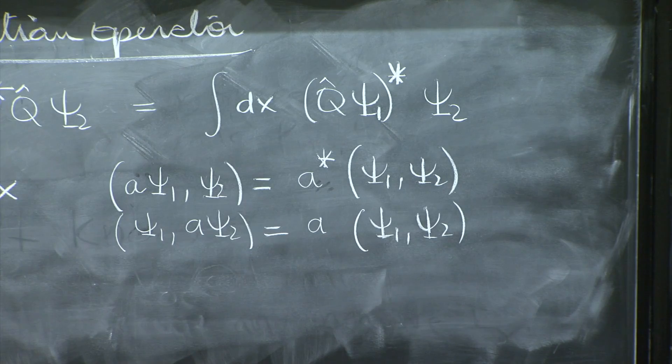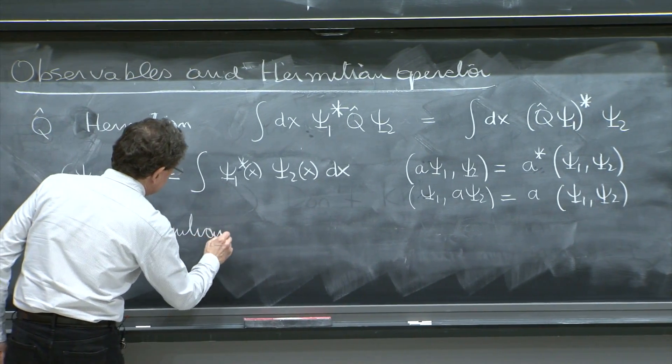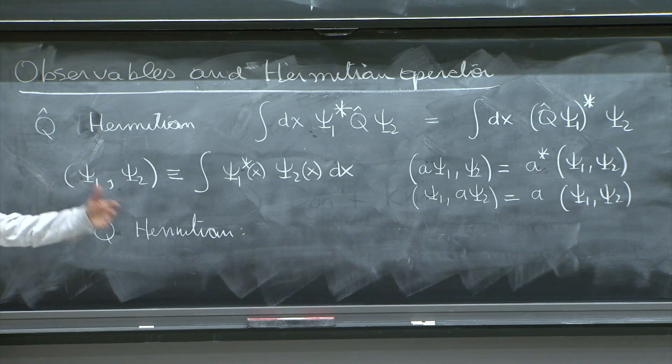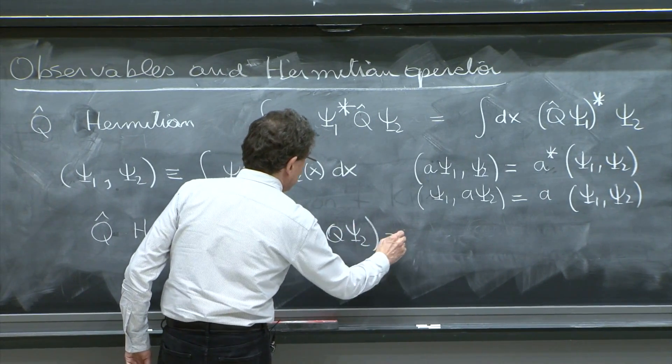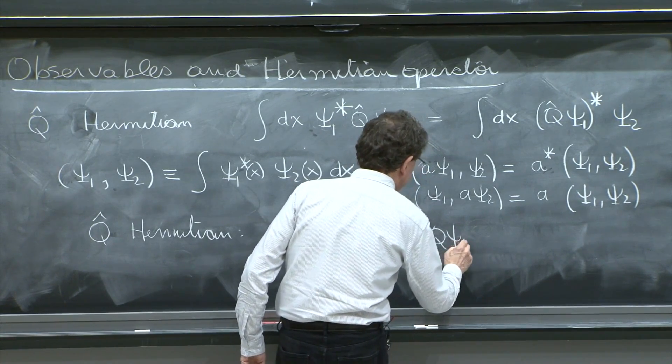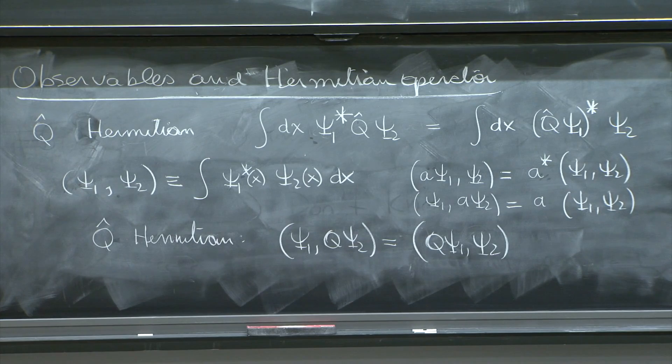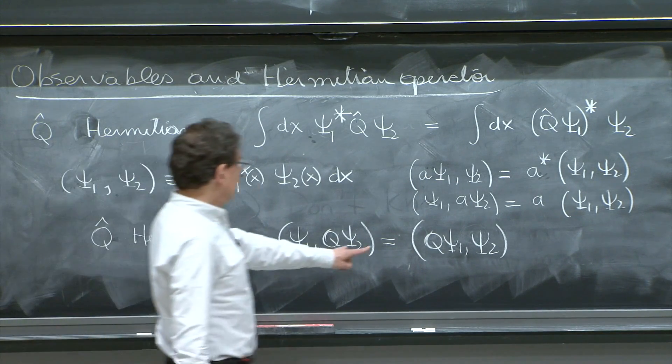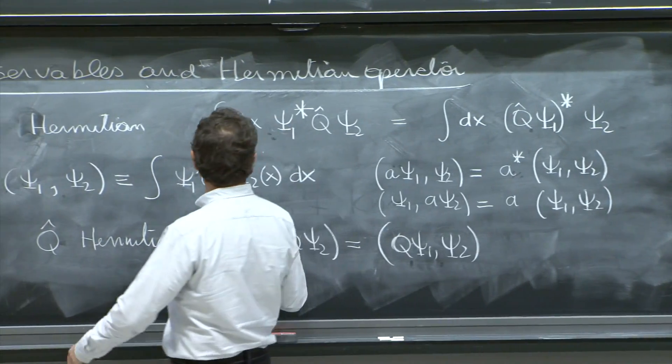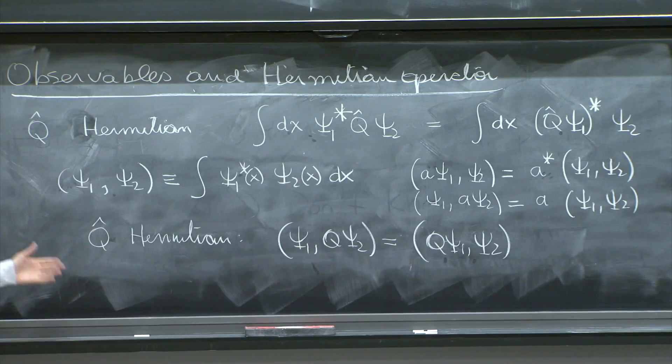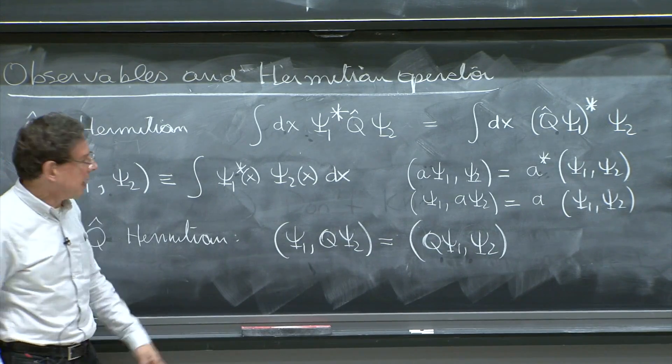With this definition, a Hermitian operator Q has a nice look to it. It becomes kind of natural and simple. It's the statement that if you have psi 1 comma Q psi 2, you can put the Q in the first input: Q psi 1 comma psi 2. This second term on the right hand side is exactly this integral here. And the first term on the left hand side is the left hand side of that condition. It's just maybe a briefer way to write it.